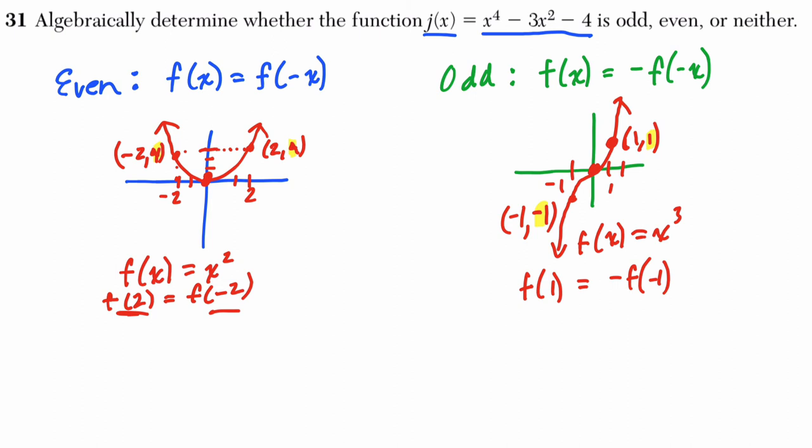So without any more suspense, let's do it. Let's see what happens. If I plug in negative x to j, what would happen? I would get negative x to the fourth minus three times negative x squared minus four.